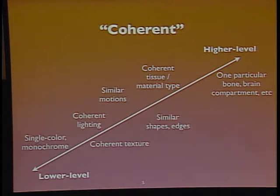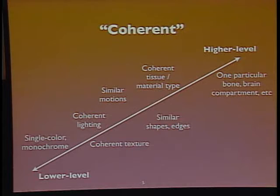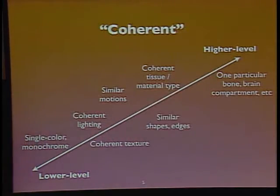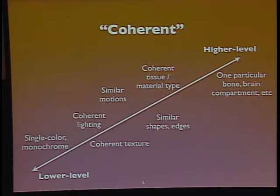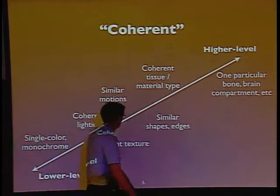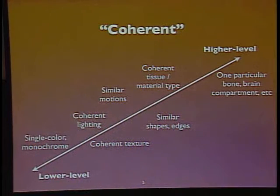We arrive again at the familiar schema where at the lower left we have crude, simple notions close to pixel values, and at the upper right we have higher-level semantic notions. This applies to your notion of what it means for pixels to be coherent. At one end, you can say: if two pixels are both red in color, they should be in the same category. Or in grayscale, all dark pixels in one category and all light pixels in another. More complicated, you can decide that pixels with coherent visual texture — all plaid pixels in the plaid category — belong together.